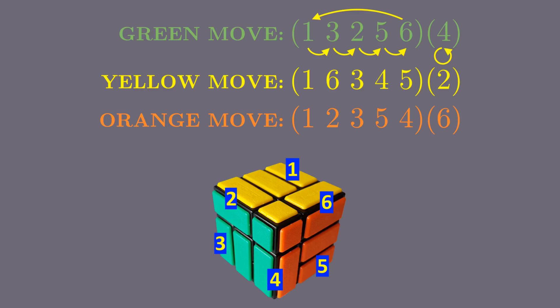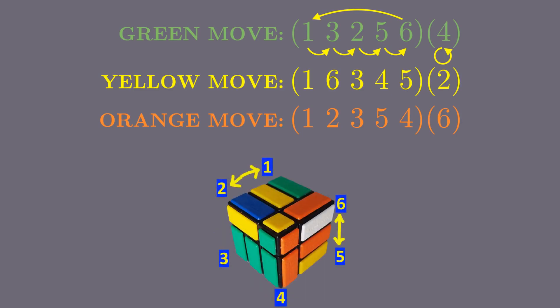Compositions of these three moves give us all possible scrambles of the puzzle. Computation shows there are in total 60 of these. Because the composition behaves nicely, we call this collection a mathematical group. Now our task is, given any scramble, to figure out how to undo it using a combination of green, yellow, and orange moves.